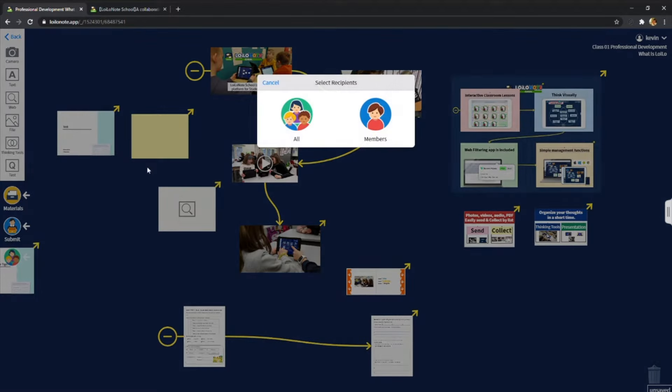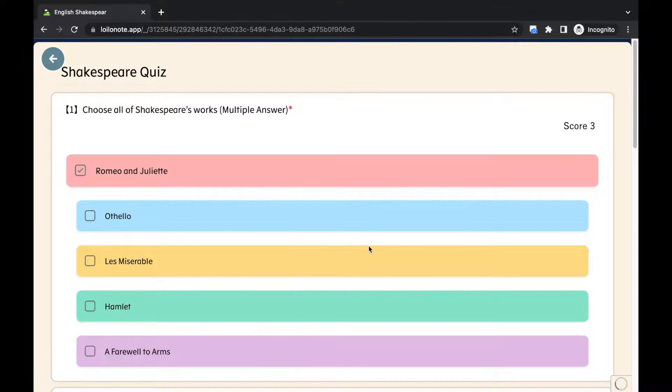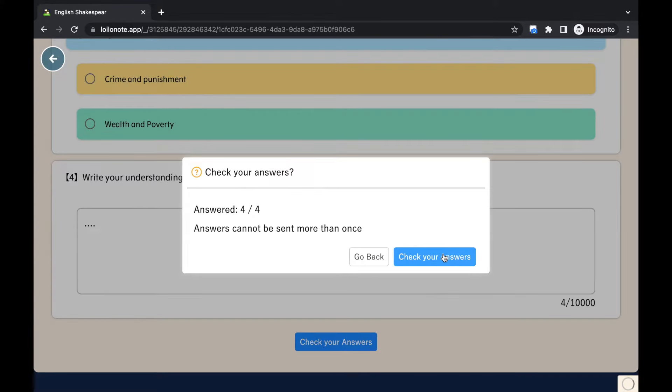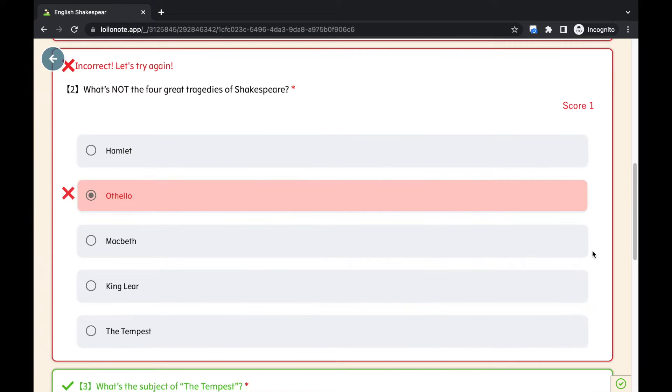Test cards are sent to students. They can answer the questions in their own time. After automatic grading, students can learn by themselves by watching the explanations.